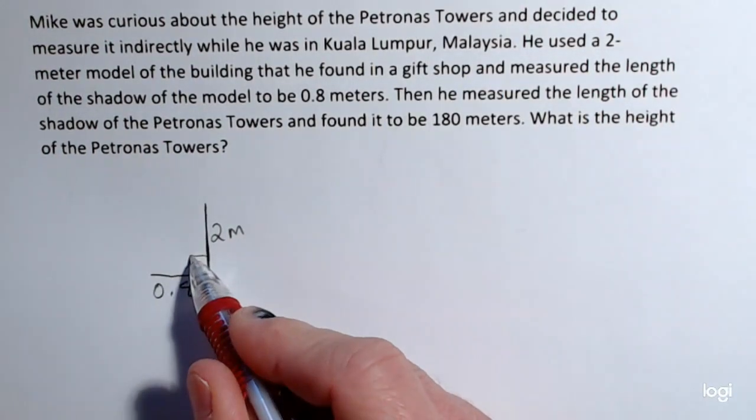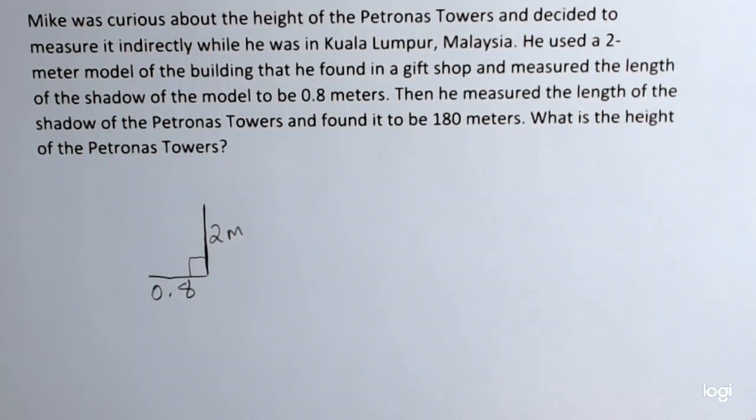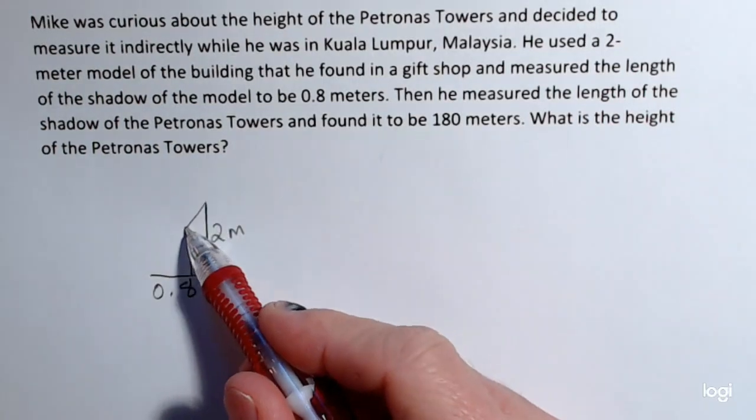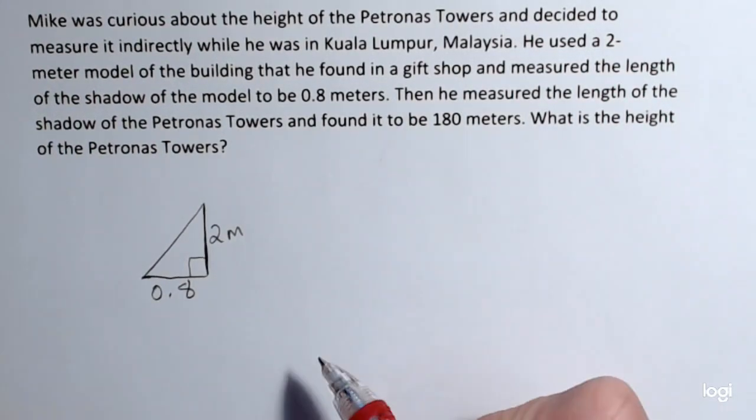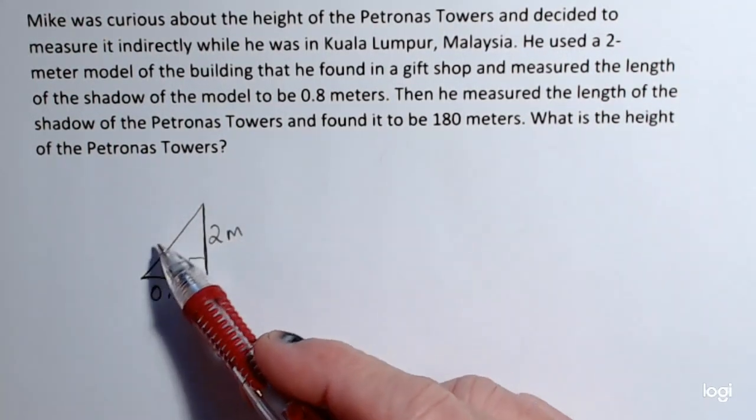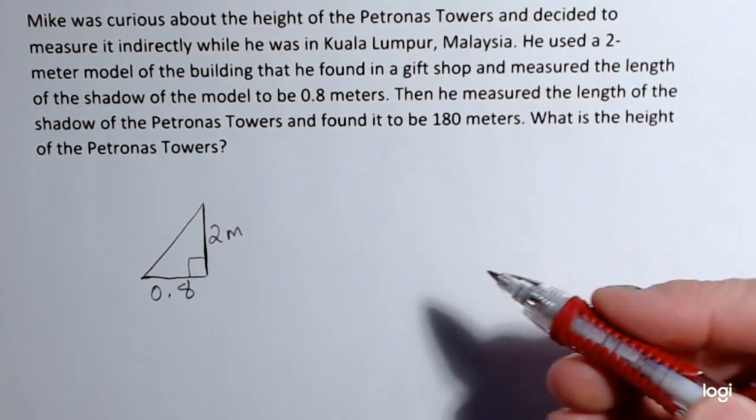So this is going to be a right angle right here and I can enclose this with a hypotenuse. So this is the triangle that represents the model.